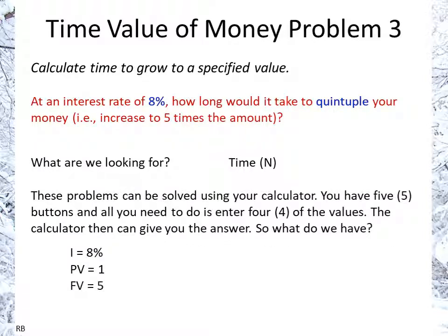So here I have 1 and 5 for present value and future value. It will work with anything. And again, we have a situation here with payment zero. Payment is the regular cash flow for each period, each N, and we don't have anything here. We have an initial amount, and then at the end of N we're going to have a future value.